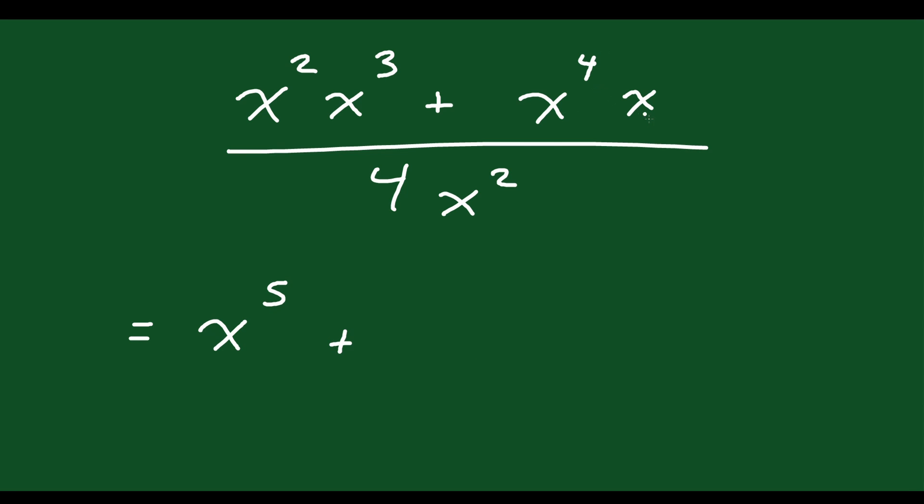This one over here, x to the 4 times x to the 1, that will also become x to the 5. And on the bottom, of course, you have 4x squared.